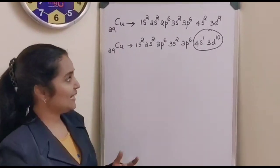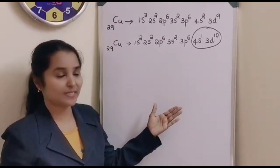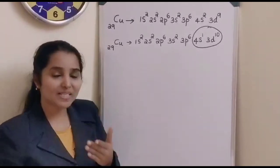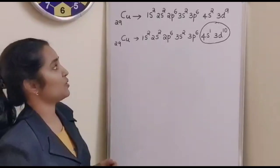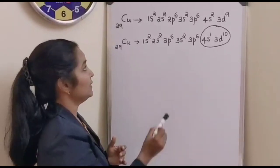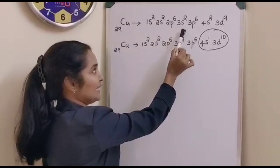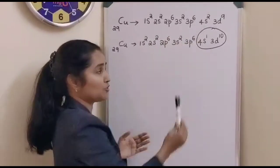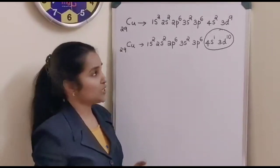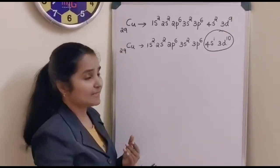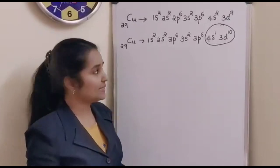Now you can see the exceptional electronic configuration of copper. Copper has the atomic number 29. So it is supposed to have the electronic configuration 1s2, 2s2, 2p6, 3s2, 3p6, 4s2 and 3d9 according to the Aufbau principle, filling lower energy levels first before moving to the next higher energy level.